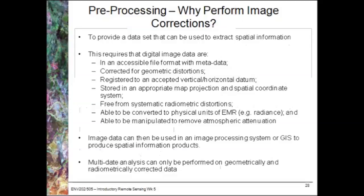We also need to ensure that the data are free from any systematic radiometric distortions — so any brightness variations throughout the images. We'd often like to convert the digital numbers retrieved by the satellite to physical units of electromagnetic radiation, such as radiance or reflectance. We also need to be able to remove atmospheric attenuation, ensuring that we're getting the true signal rather than the signal from the atmosphere. Once we've done all these, we can use them in an image processing system or GIS to produce spatial information products.